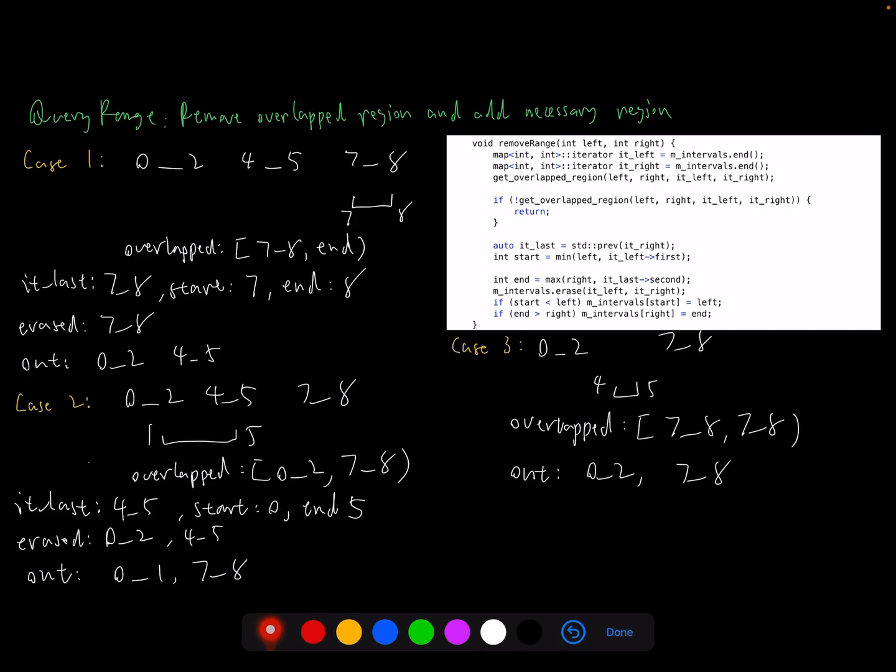Then next is the remove range. Here is another typo here. We have a remove range. So it's very similar to the add range - we remove overlap region and add necessary regions. Here, in most cases, we need to add two, right? Because we probably need to modify the left one and the right one based on the query range. Let's look at an example here.